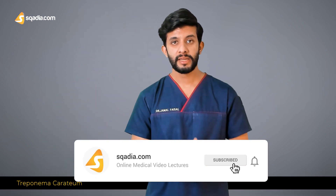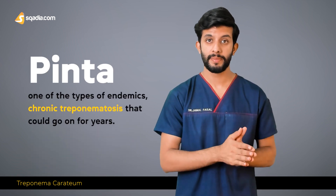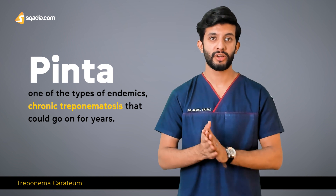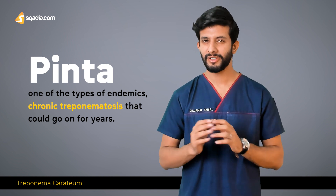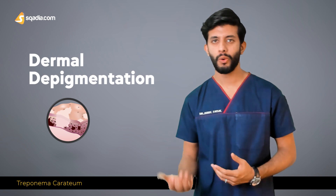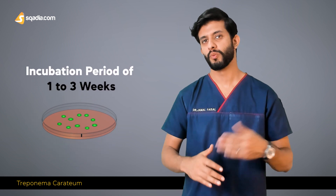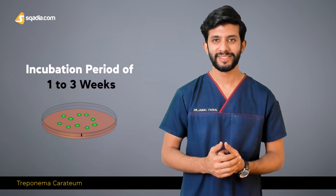Treponema carateum is another subspecies and is the causative agent for pinta. Pinta is one of the types of endemic chronic treponematoses that can go on for years and years. It is characterized by dermal depigmentation. Transmission is through direct contact. The incubation period is from one to three weeks, and the antibiotic of choice in this case is also penicillin G.